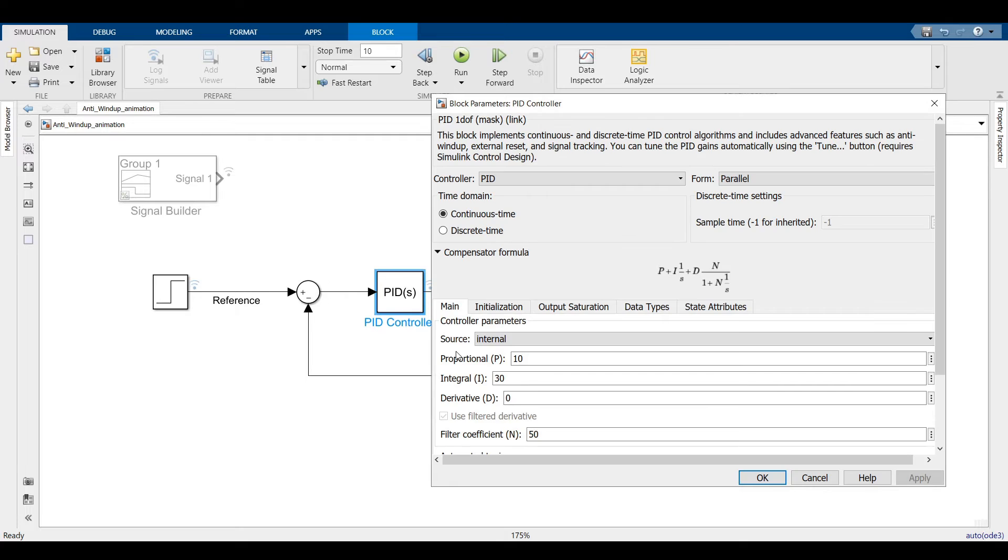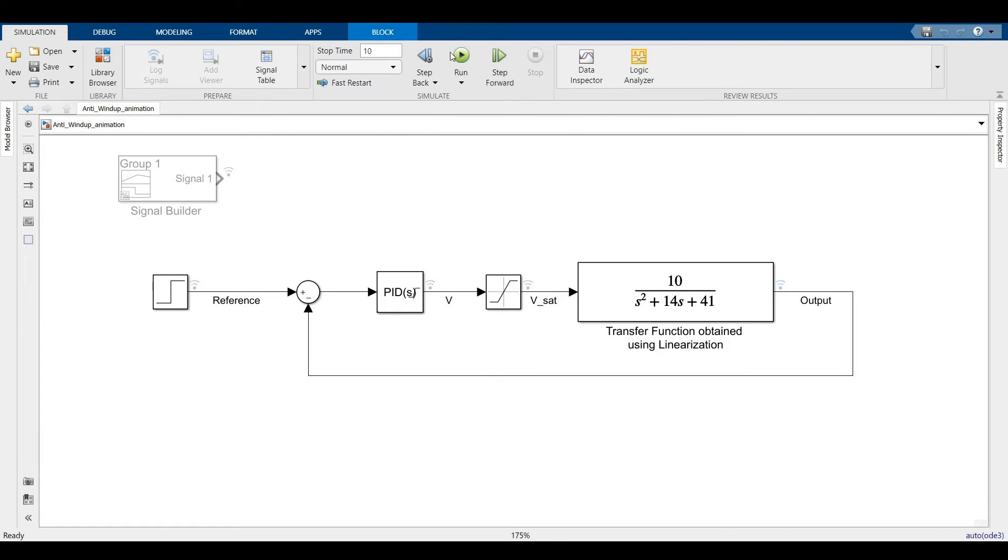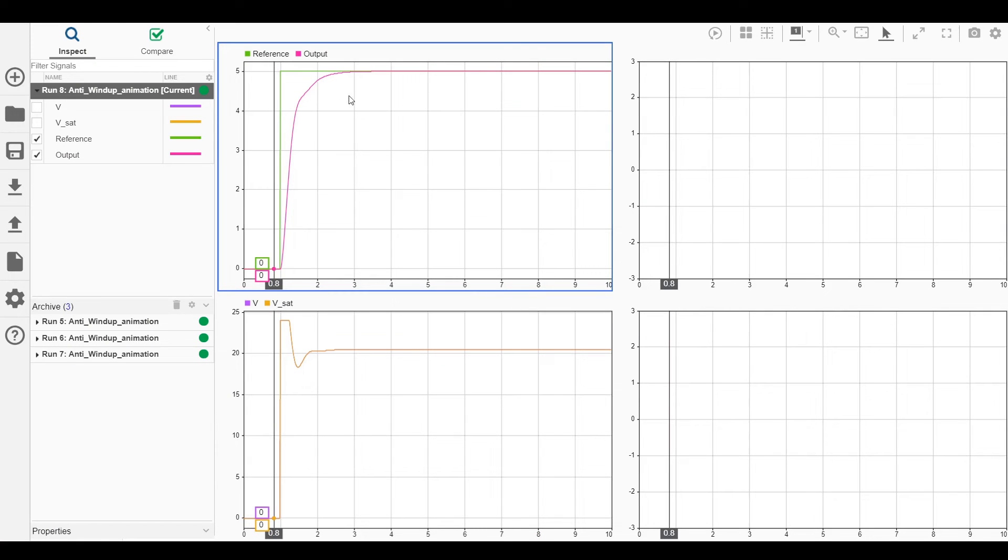The PID controller block has inbuilt saturation. Then it also has an option of integrator anti-windup. I will just use the clamping method, feel free to try out other methods. Now let us run the simulation. There is no overshoot and you can also check that the commanded input never crossed the saturation limit. So we have indeed solved the problem of integrator windup.